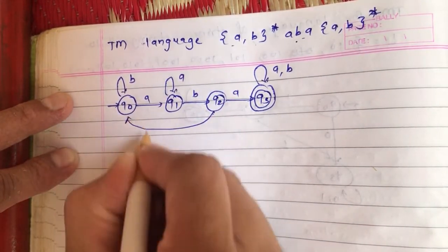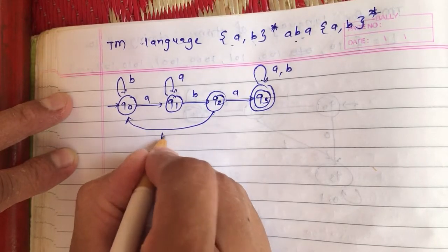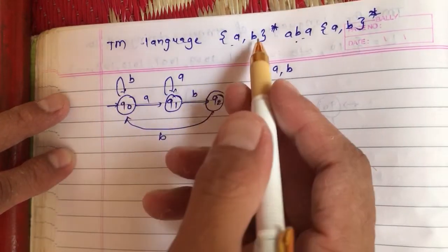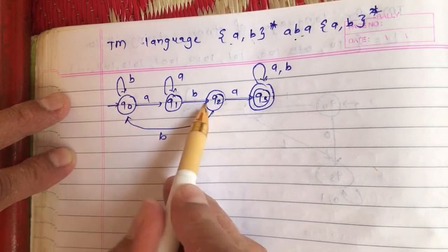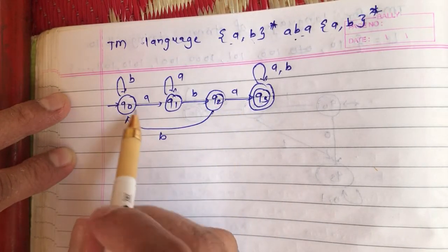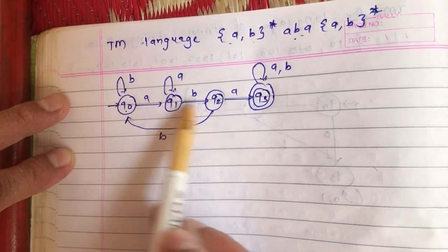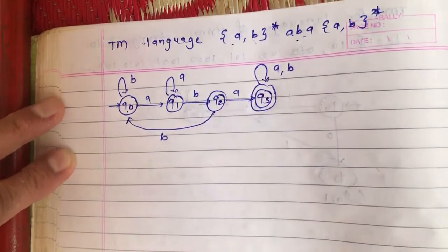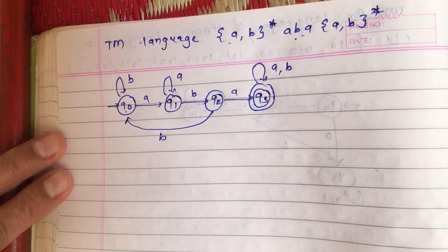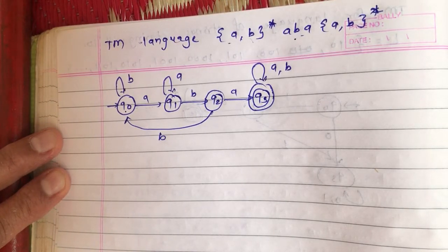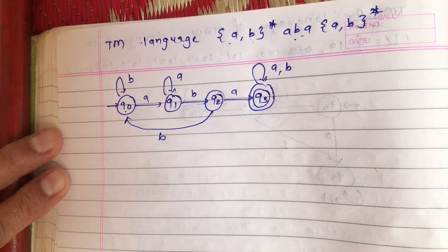If there are any a's and b's at the start, we'll keep on moving until we get aba before we reach into an accepting state. Every state is having a and b combination. This is the DFA for the language of strings containing aba as substring.